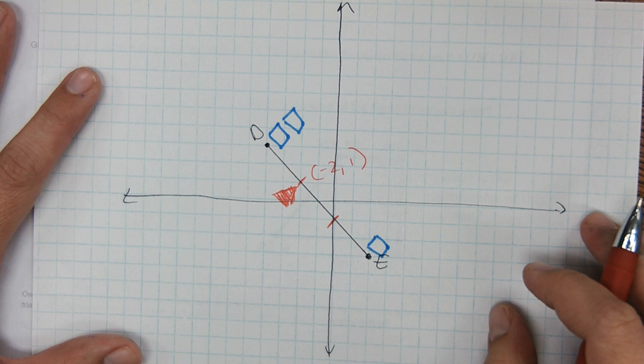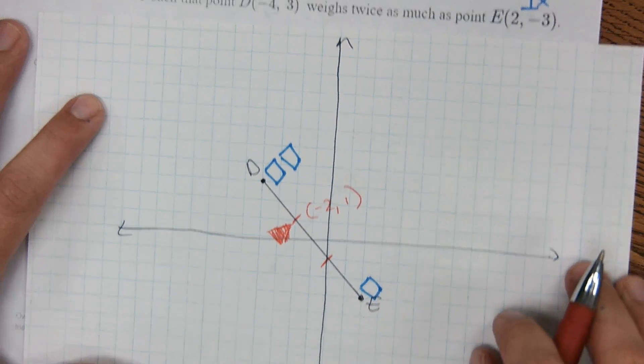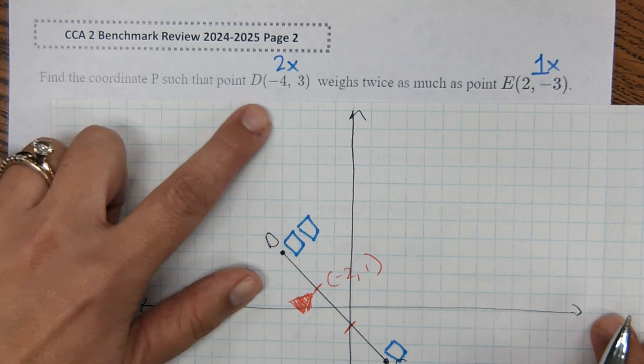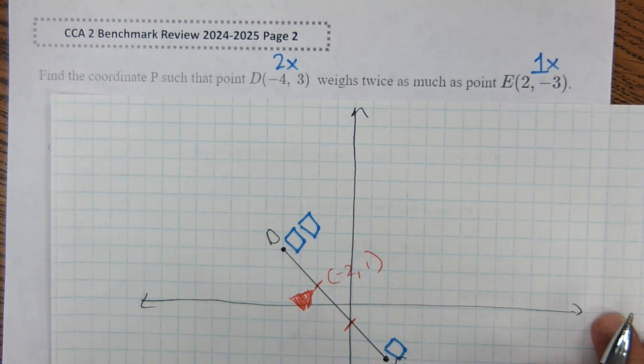Student: We did that too. So why is it only as it's 1? Teacher: So it says D is twice as much as E. Student: Yeah. So why is the balance point more close to E?